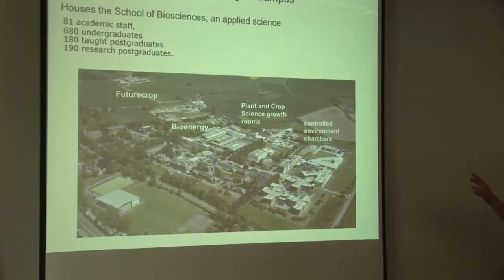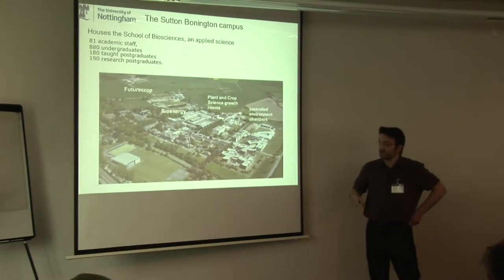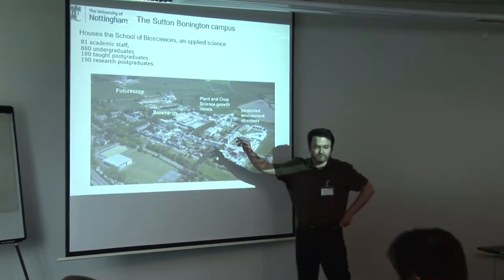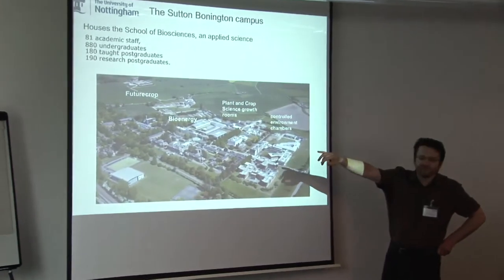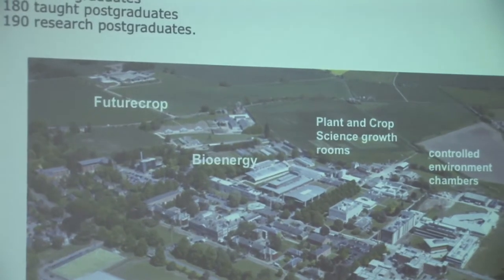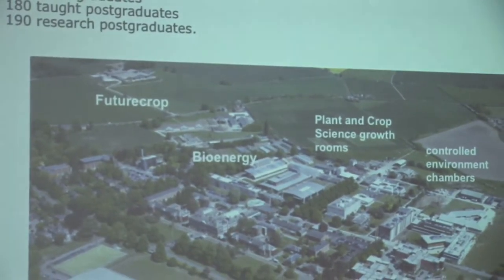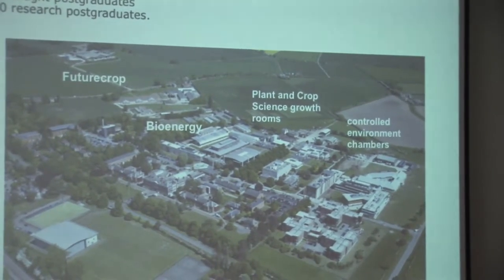This is a more up-to-date picture of Sutton Bonnington campus that Jerry showed this morning. I just wanted to point out the facilities we have for growing plants. If you look over on the far left, there's a new set of glass houses called Future Crop built by Cambridge Glass Houses. We use these to simulate crop growing environments and change conditions, and I think that this is something that is actually appropriate to vertical farming systems.